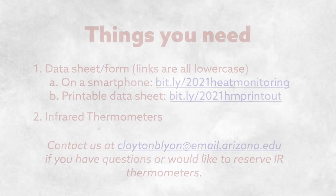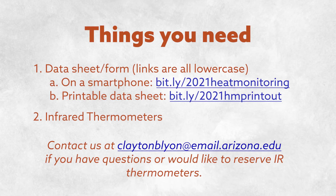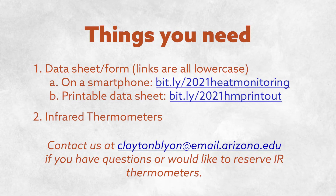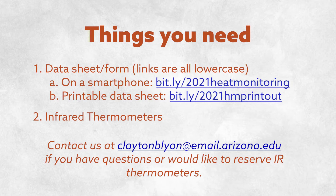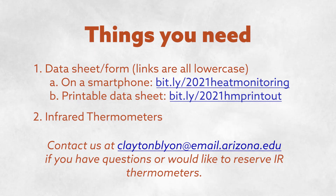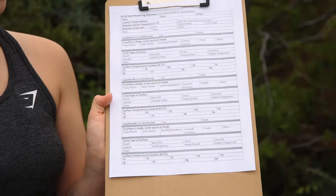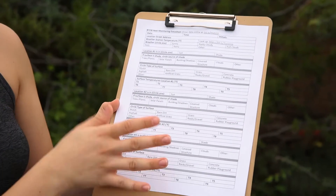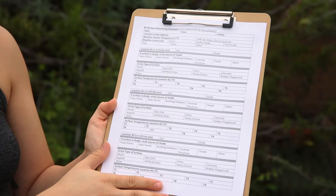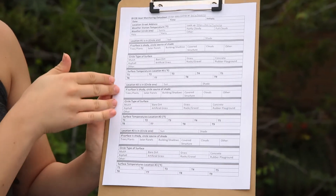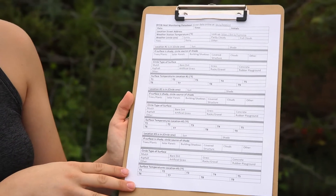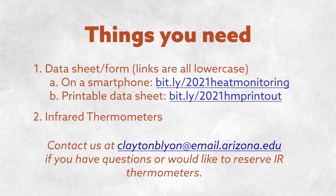You're only going to need a few things to take these data points. One is going to be our heat monitoring data sheet. You can access this either online through a Google form using a handheld device, or if you don't have access to a handheld device, you can print out a data sheet that we have available as well. If you're using the printed sheet, just take your data when you're outside, write it down, and once you get back inside you can input it on your computer. You're also going to need this IR thermometer, which is what you'll use to take temperature data points on the ground.